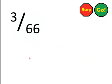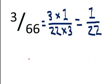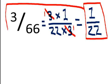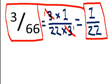3 over 66 — press on the stop sign. We'll see how you did. 3 can be factored as 3 times 1, and 66 can be factored as 22 times 3. So this 3 cancels with that 3 and just becomes the number 1. 1 times 1 is 1, and 22 times 1 is 22. So 1 over 22 is the same amount of stuff as 3 over 66.